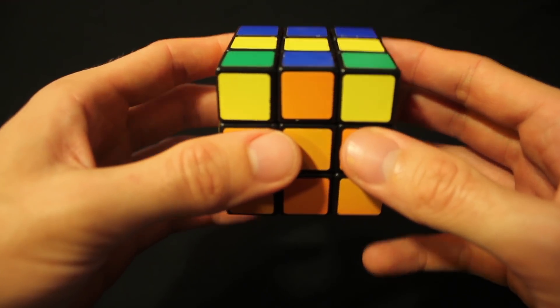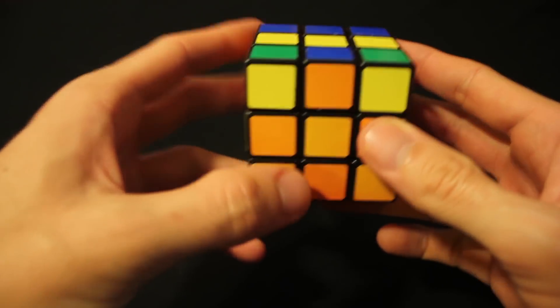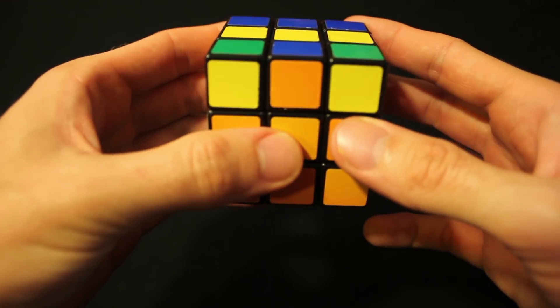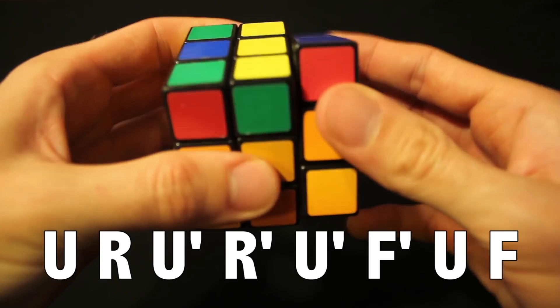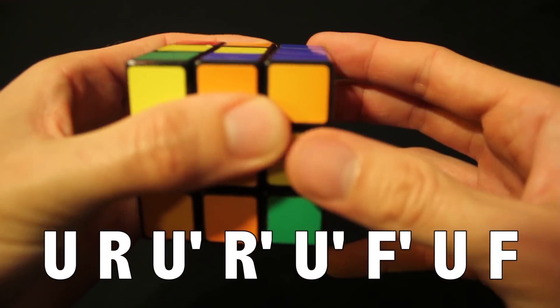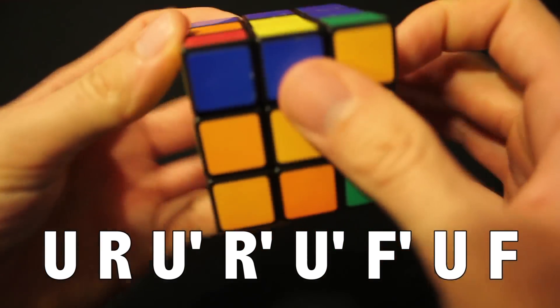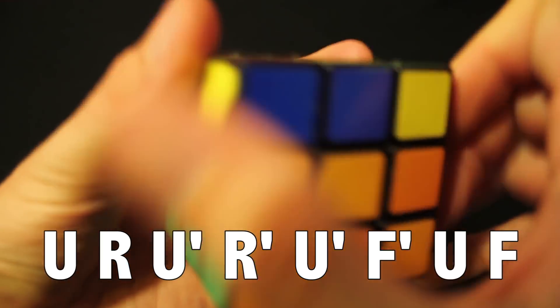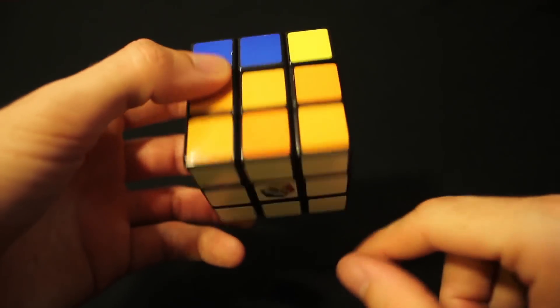So the algorithm that we're going to learn here from this position, with it looking at you, the orange looking at you, is: up, right, up inverted, right inverted, up inverted, front inverted, up, front.